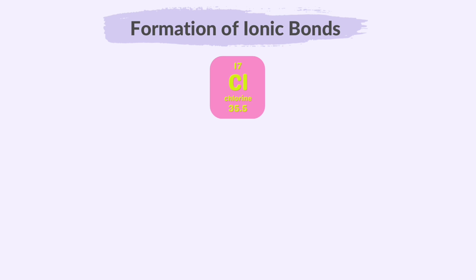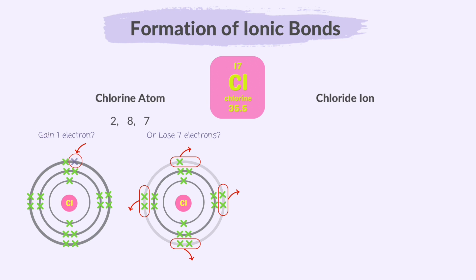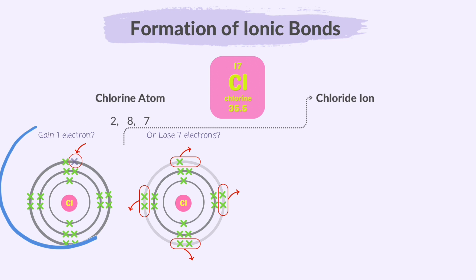Chlorine is a group 7 element and has an atomic number of 17, so its electron configuration is 2, 8, 7. This means it has 7 electrons in its outer shell. To achieve a full outer shell, chlorine can either gain 1 electron — if it adds just 1 more electron to its outer shell, it will have 8, which is a full outer shell — or it can lose 7 electrons, so the inner part with 8 electrons becomes the new outer part. That would also be full since 8 electrons are the most it can hold. Is it easier to gain 1 electron or lose 7? Gaining 1 is much simpler, so that's what really happens.